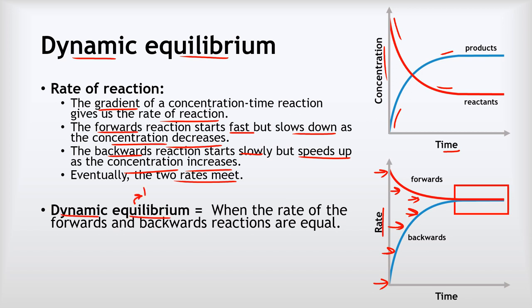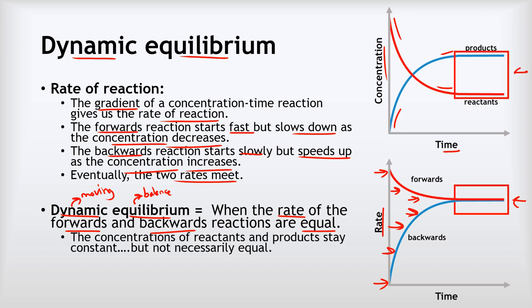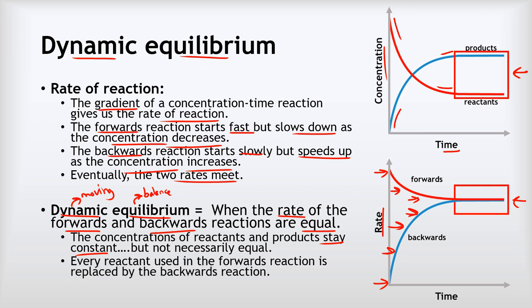We end up with the rate of the forward reaction and the backward reaction being the same, and that leads to a situation we call dynamic equilibrium. Equilibrium means something like balance, and dynamic means something like moving. The reaction hasn't stopped — the forwards and backwards reactions are still happening, but their effects are canceling each other out. The concentrations of products and reactants stop changing; they stay constant, not equal to each other, but constant.